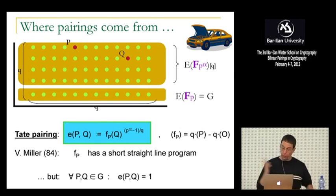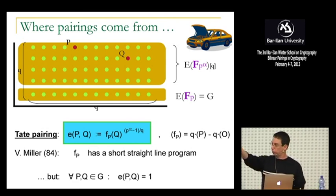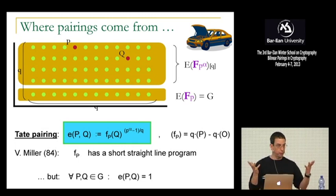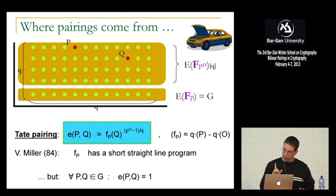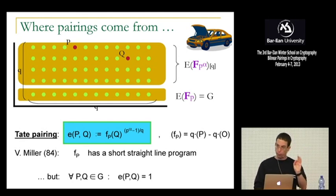There is a problem though: if you take P and Q to be in the ground field — which is what we want — the pairing maps everything to one. It's degenerate over the base field, even though it's non-degenerate over the whole Q-torsion group. So we need to solve this problem. There are three solutions, giving rise to three different types of pairings.